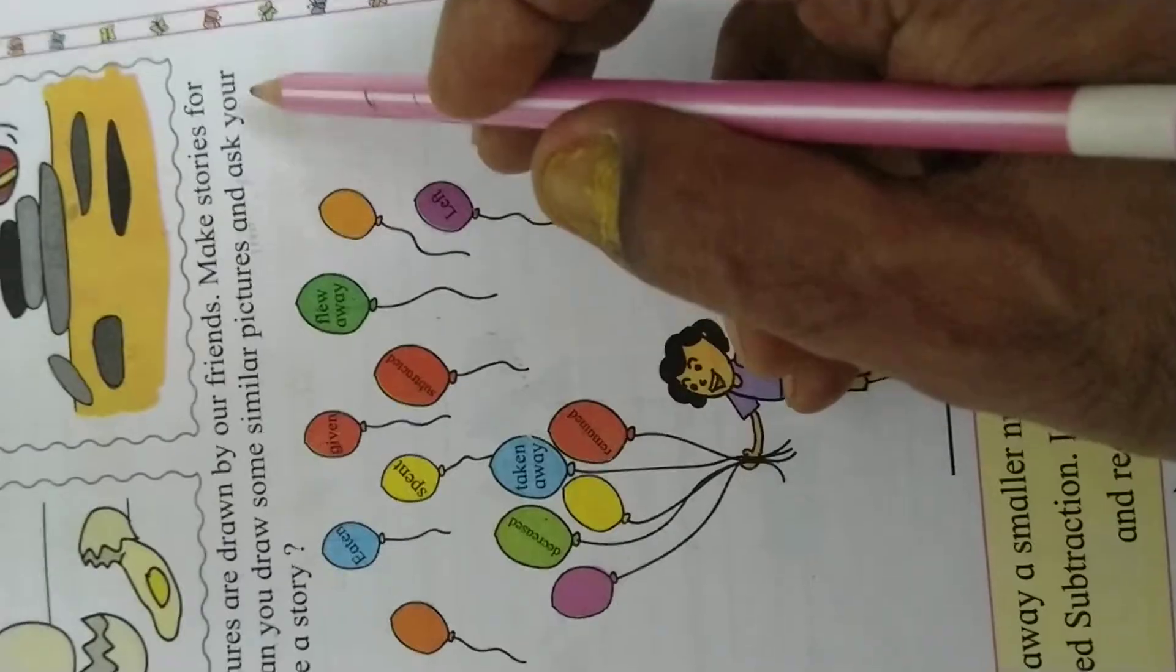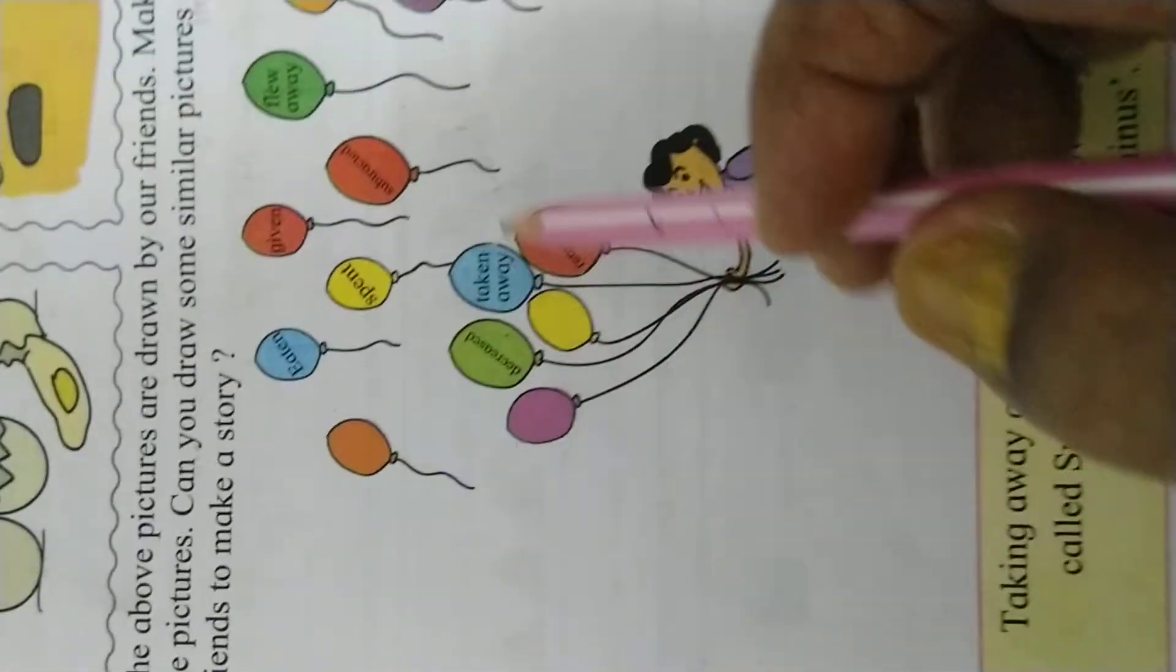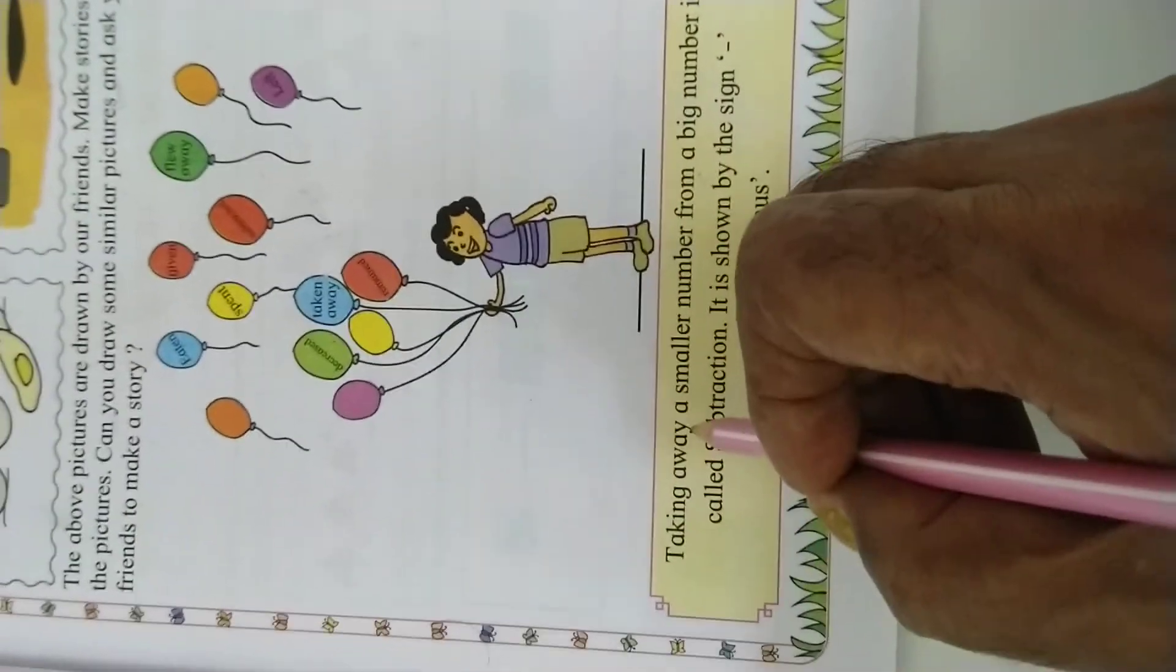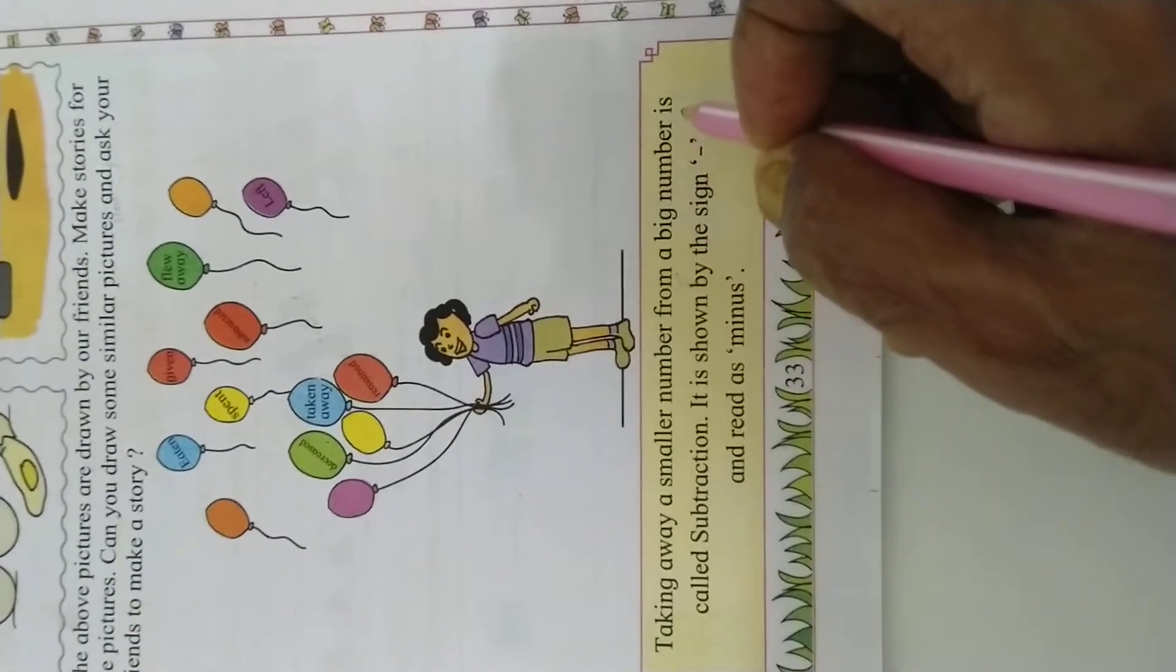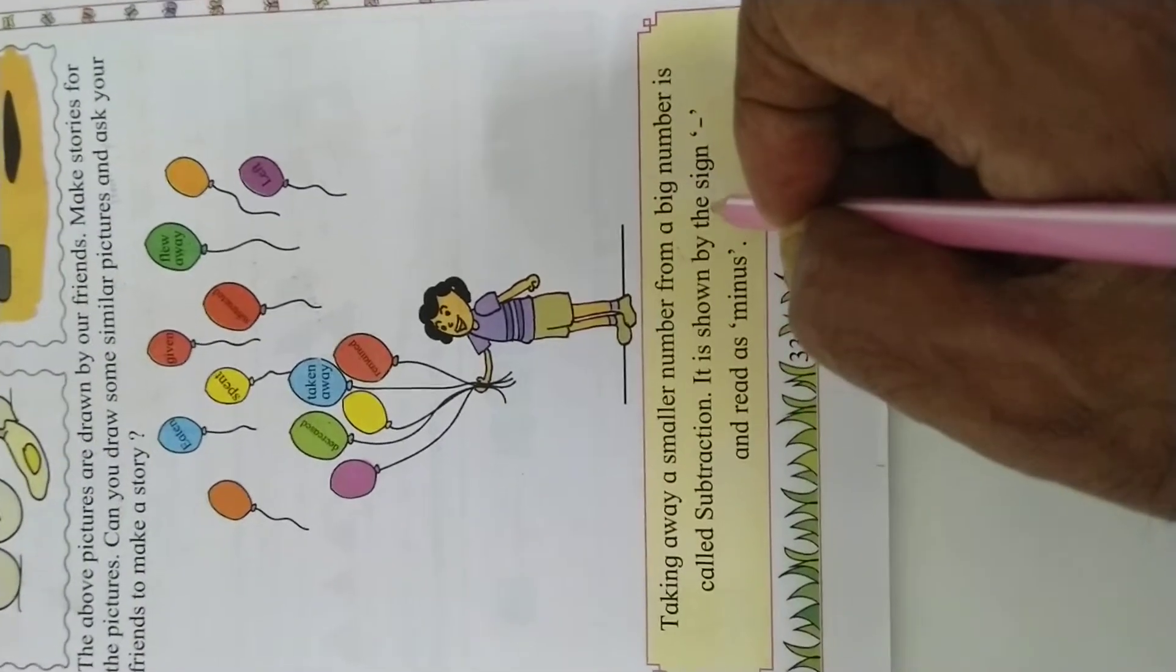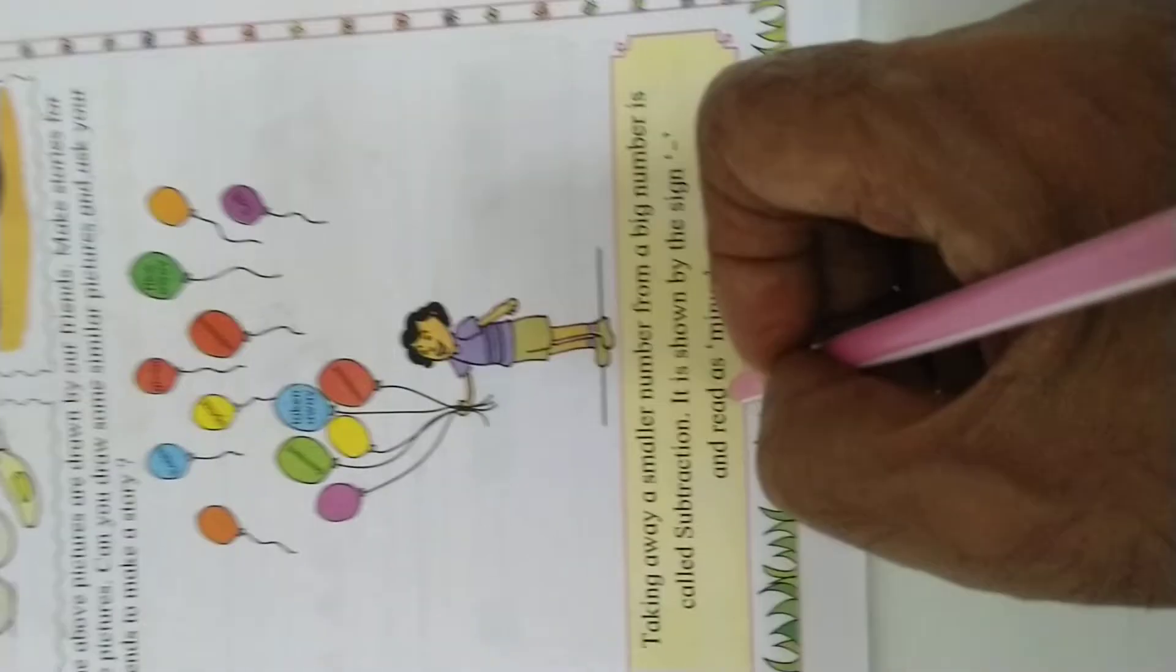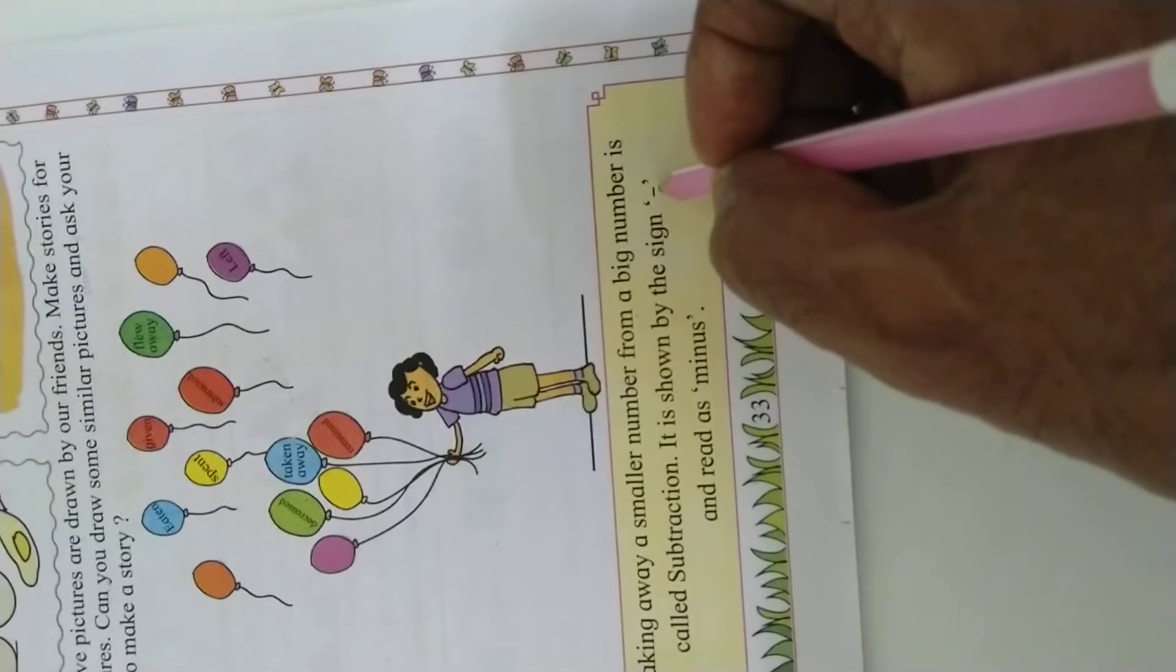In this way, taking away a smaller number from a big number is called subtraction. It is shown by the sign minus and read as minus.